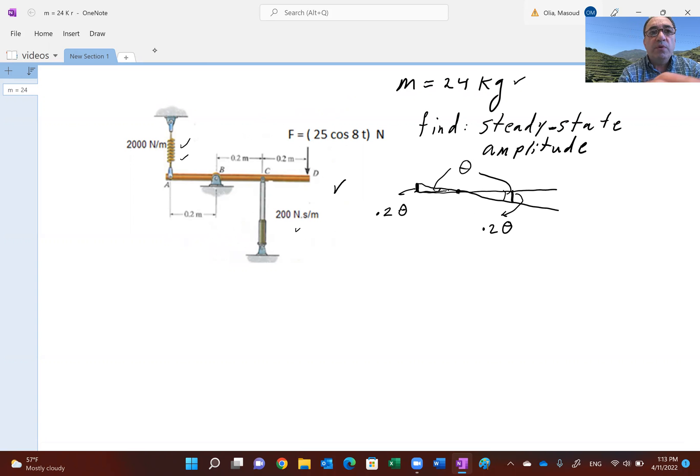Drawing the free body diagram here, you'll see that since the spring moves up, it's going to push back down. The force of this is the stiffness 2000 times the displacement 0.2 theta.